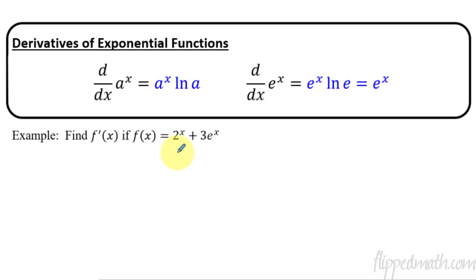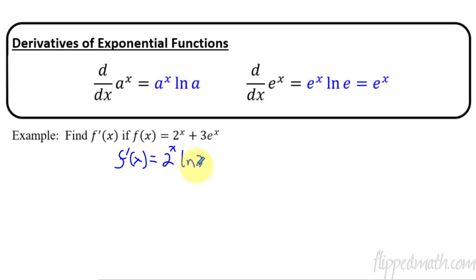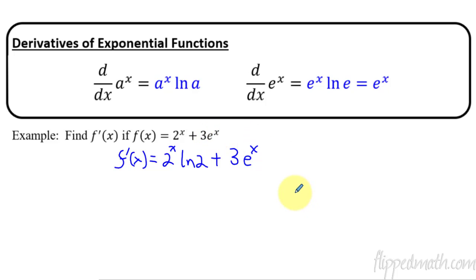Let's try a quick example. If we have 2 raised to the x, f prime of x equals 2 raised to the x times natural log of the base, which is 2. Plus, this next term is just 3 e raised to the x — it doesn't change. The derivative of e to the x is still e to the x. So that's it for this one.